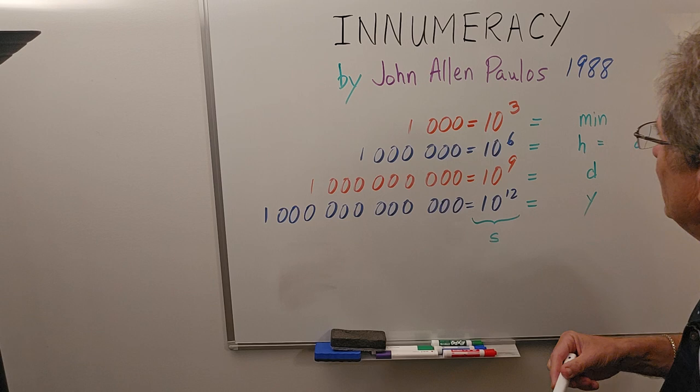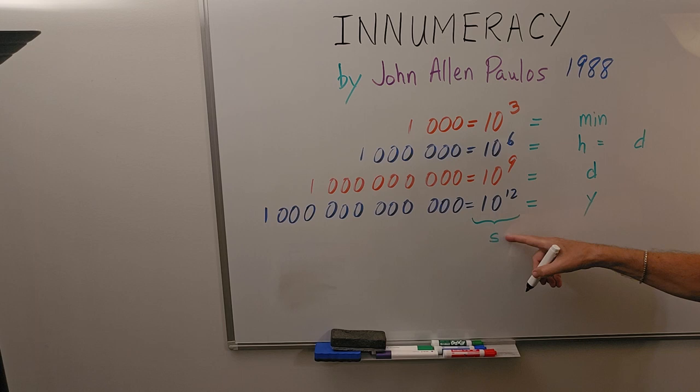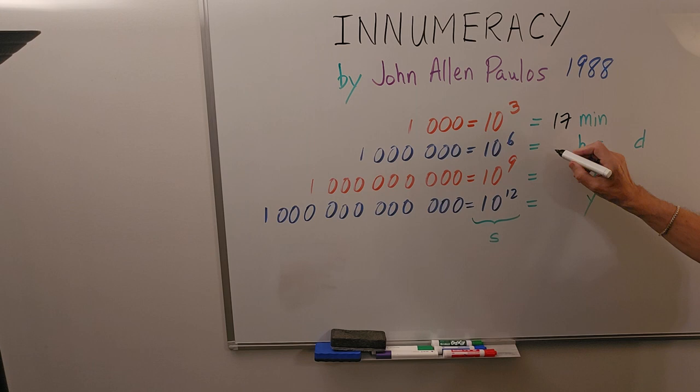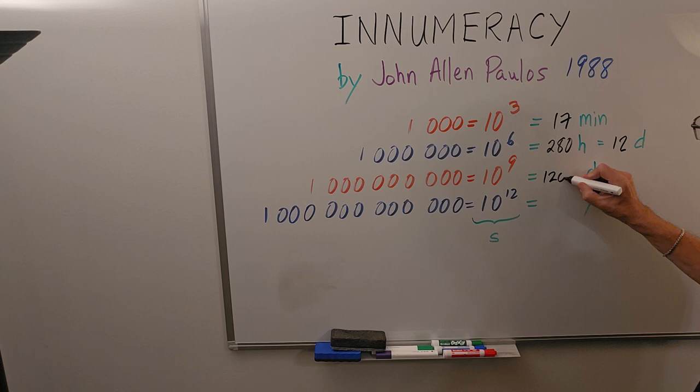Well let's give that some thought. So it turns out that a thousand seconds is about 17 minutes. I'm going to use two sig figs. A million seconds is about 280 hours, or about 12 days.